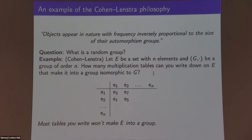The Cohen-Lenstra philosophy is the following: objects should appear in nature with frequency that's inversely proportional to the size of their automorphism groups. In other words, if some object or system has a lot of symmetries — it's very structured — that shouldn't occur in nature very often. Things that have low entropy should be rare.